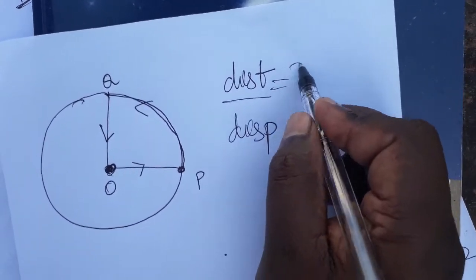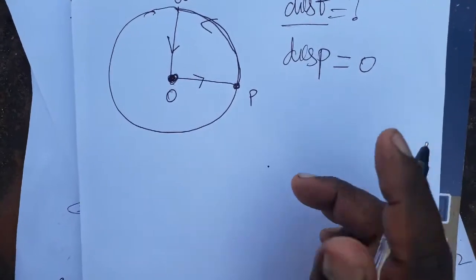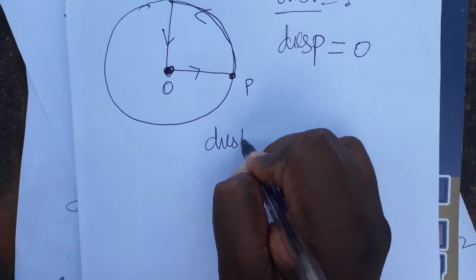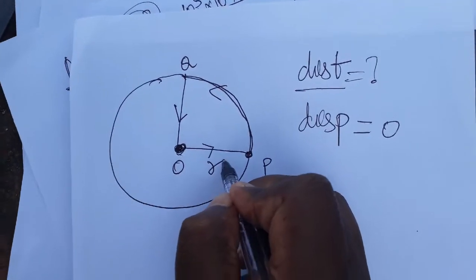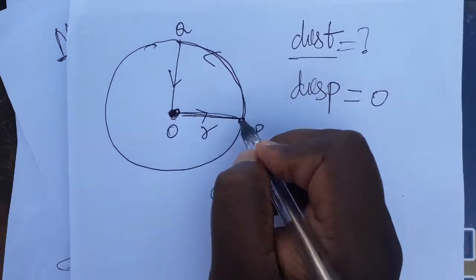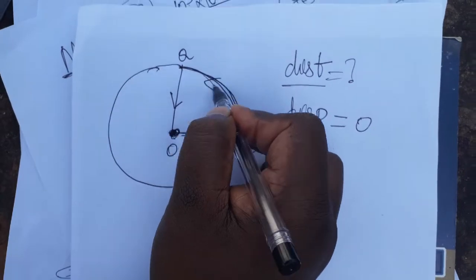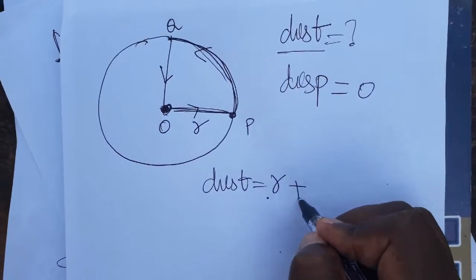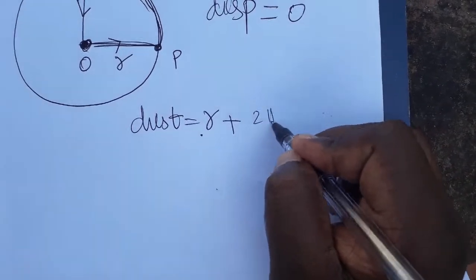Now, what is distance? Distance is a question mark. It's a little twist question. This is the radius of the circle, so I am taking r. This is a quarter portion of the circle, so the full circle will be 2πr.